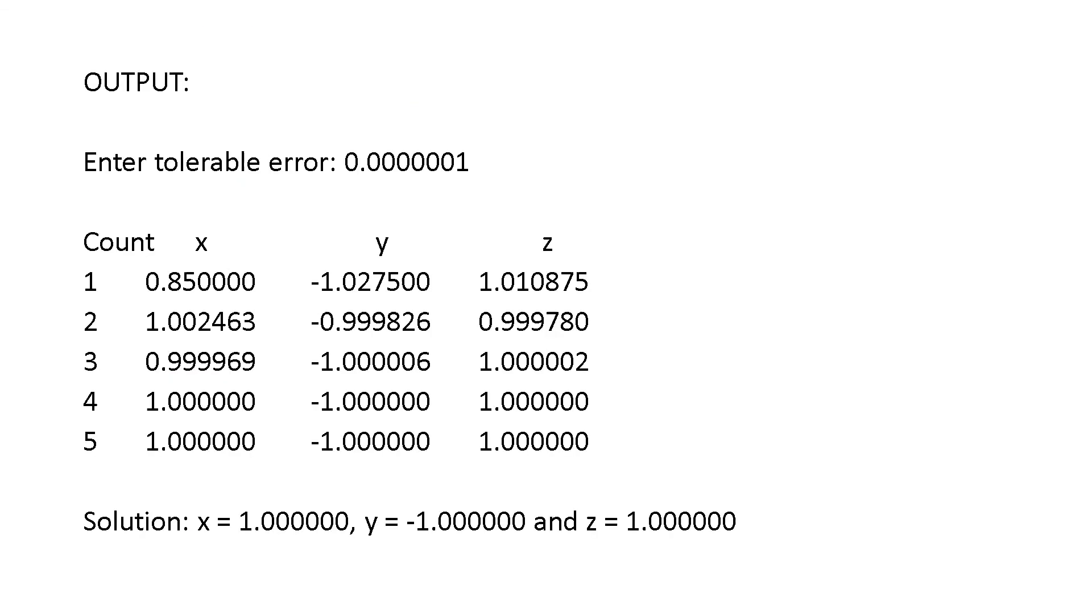Here is the output. Tolerable error E. That we have entered as this one. Count, printing the heading. And then, step value you have printed. Each iteration you are printing the value of x, y and z. And then, each and every time the difference is being calculated. And then, you can come to the solution. Here, you see, these are same. Now, you can conclude x is equal to, y is equal to and z is equal to.